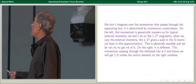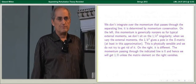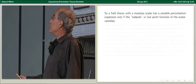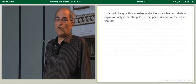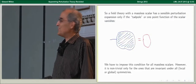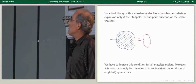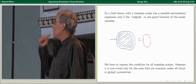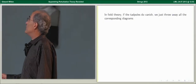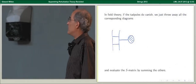Therefore, a field theory with a massless scalar has a sensible perturbation expansion only if the so-called tadpole, or one-point function of the scalar, vanishes. We have to impose this condition for all massless scalars, but it's only non-trivial for some of them. In field theory, if the tadpoles vanish, we just throw away all the tadpole diagrams and compute the amplitude by summing the other diagrams.